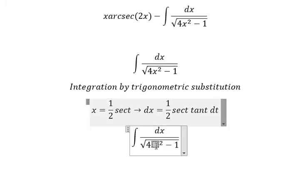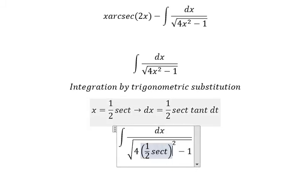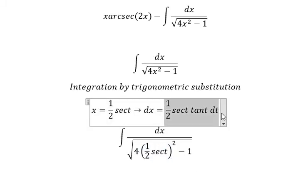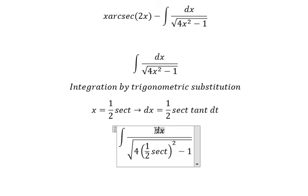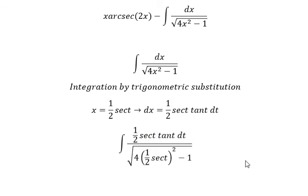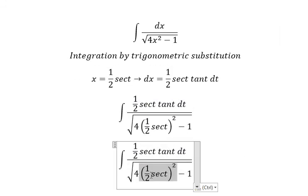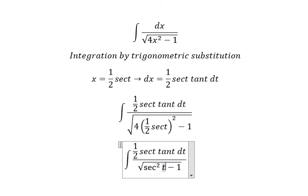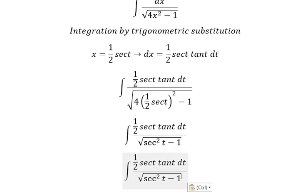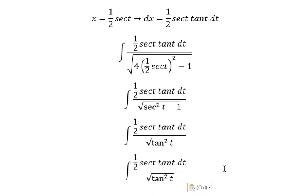We substitute this into the integral. We simplify and get secant squared t. We change this to tangent squared t. The square root of tangent squared t gives us tangent t. We simplify tangent t.